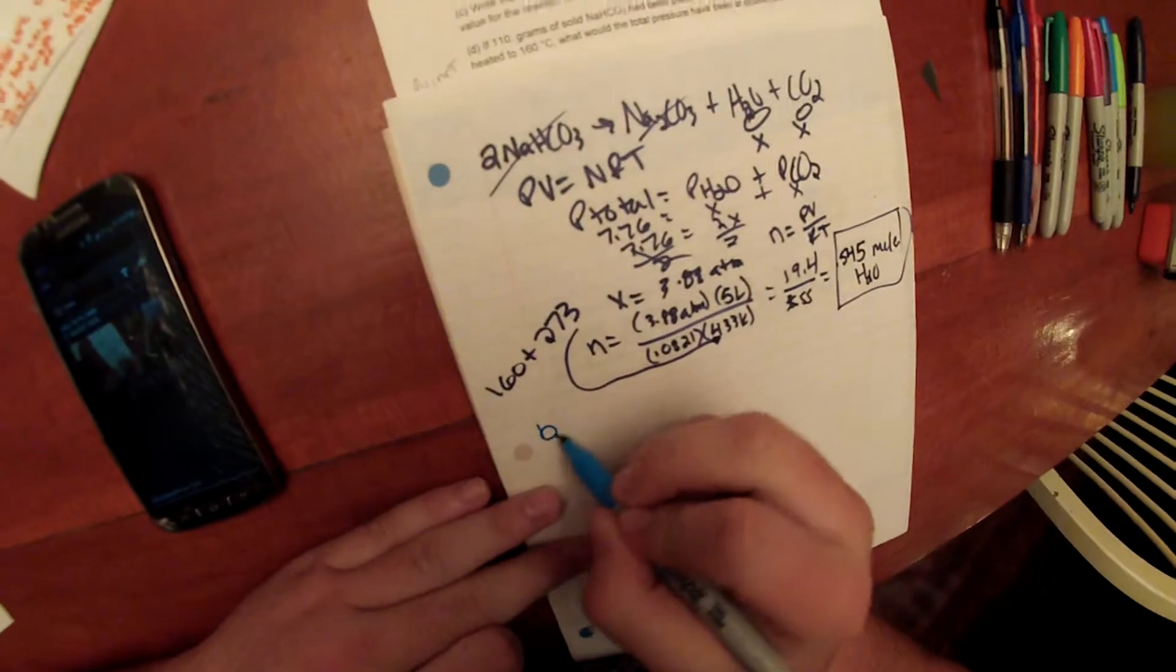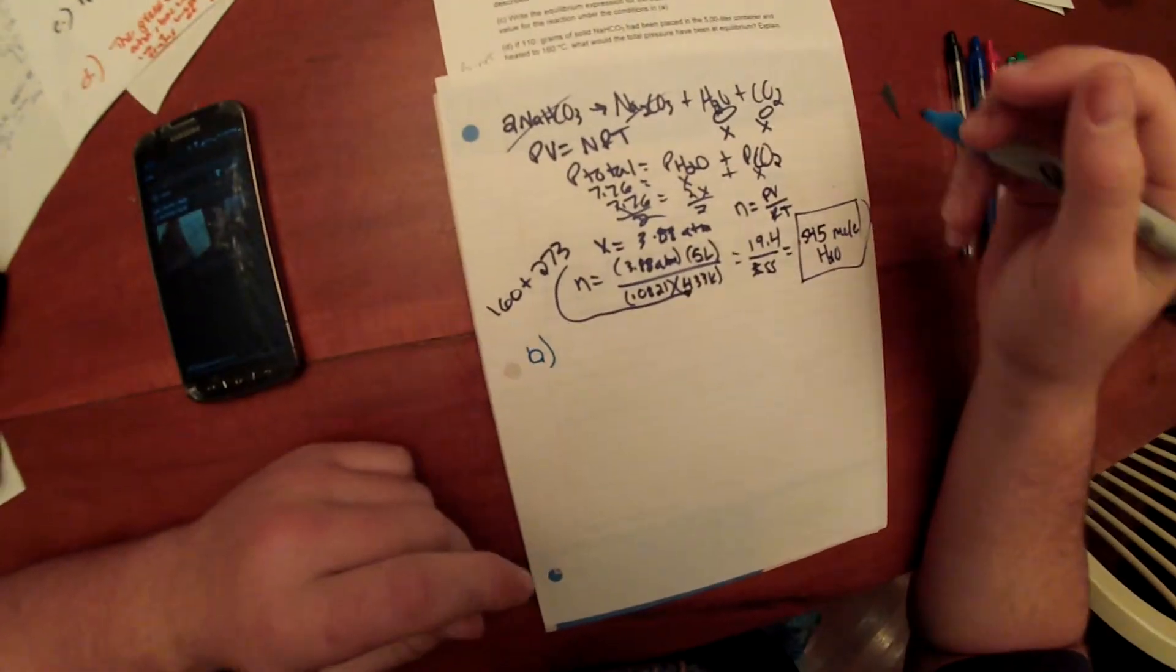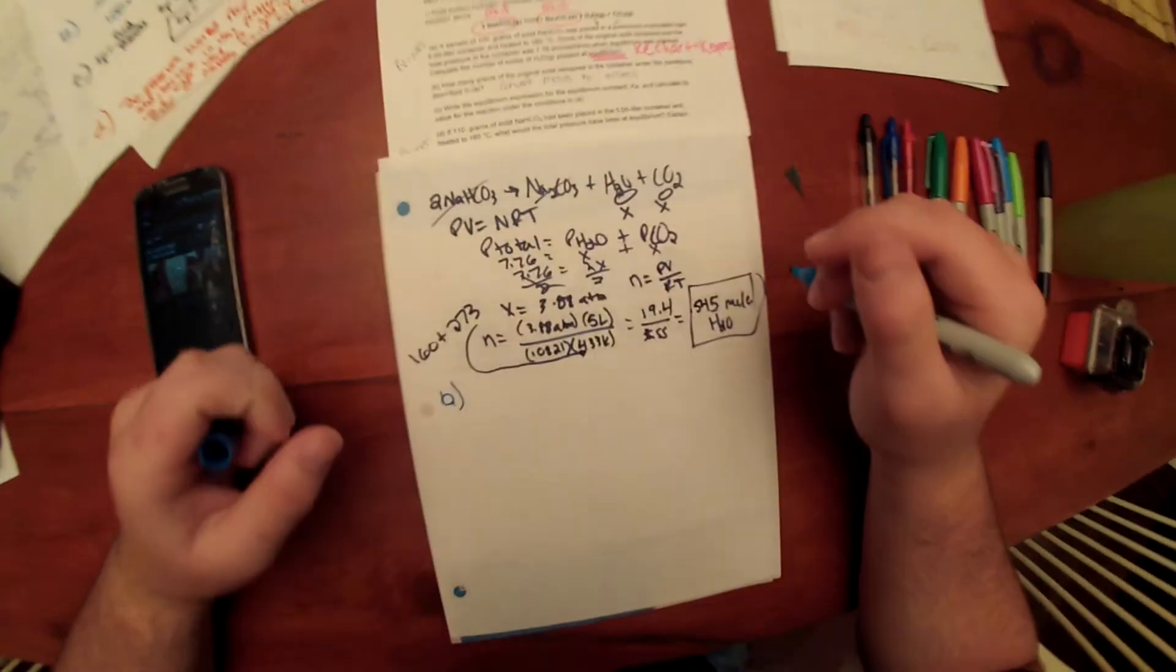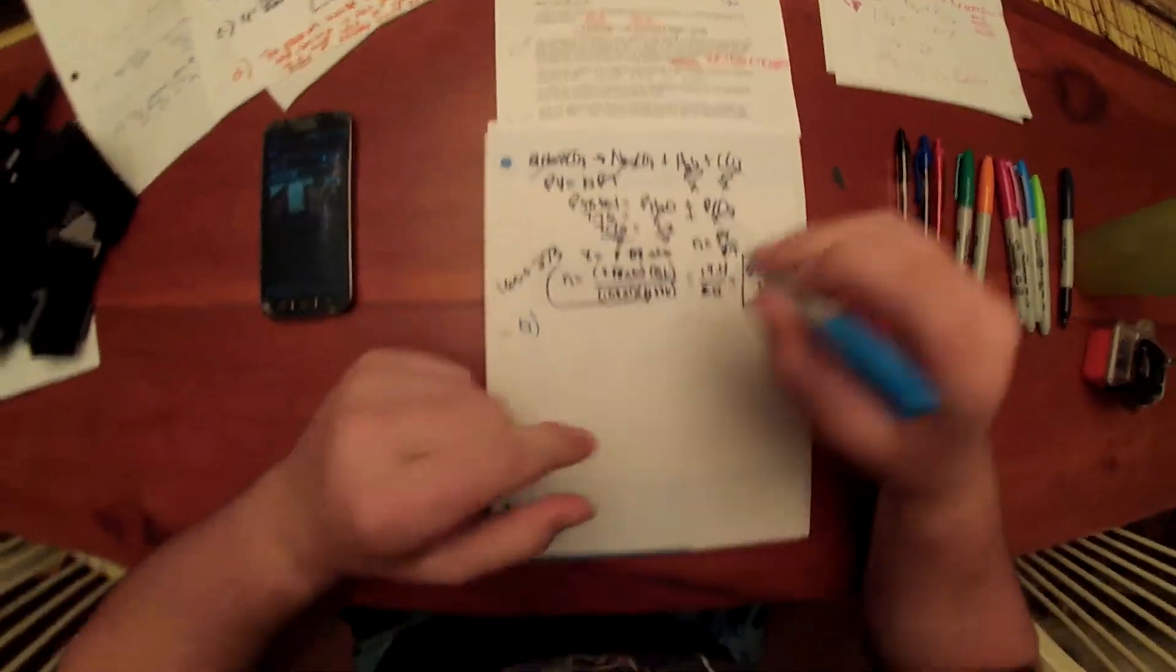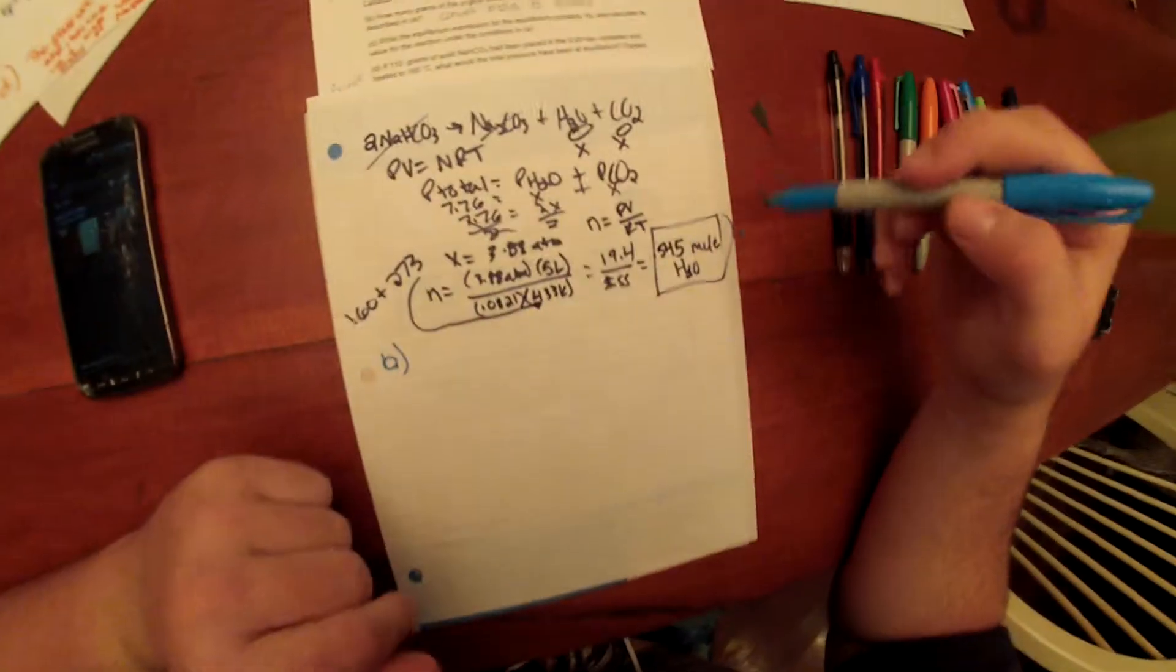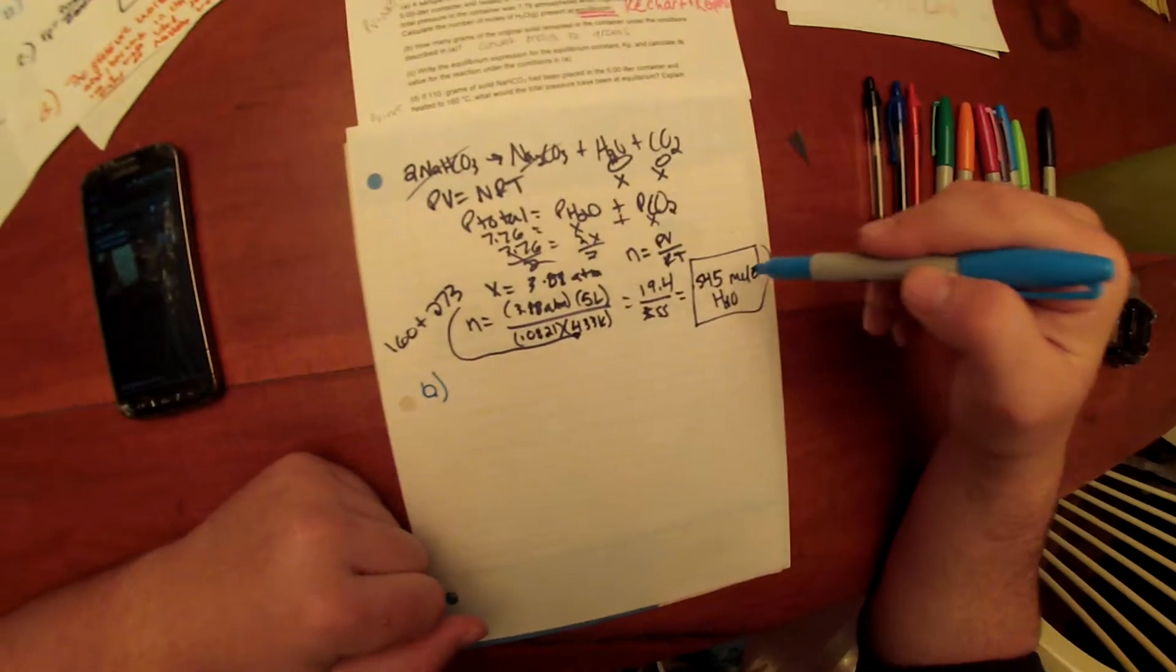Question B states, how many grams of the original solid remained in the container under the conditions described in A? So, we'll be using the moles we found of H2O in problem A to solve.